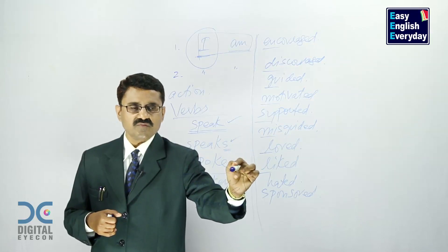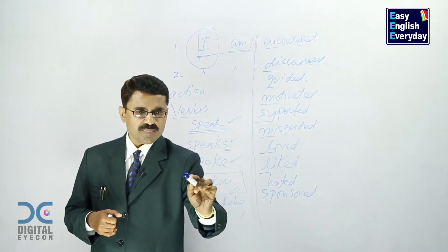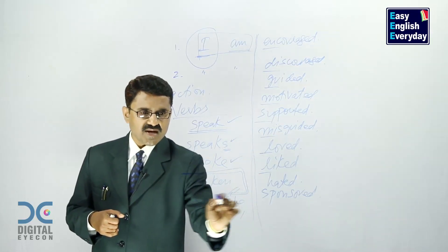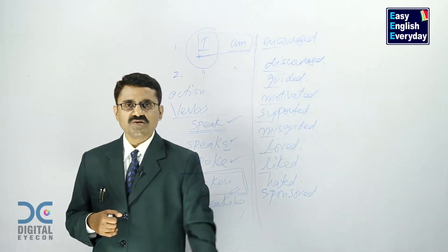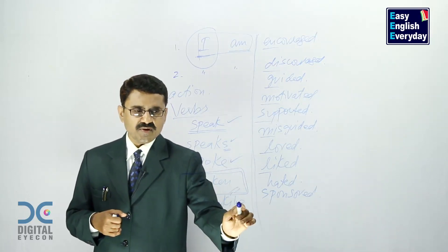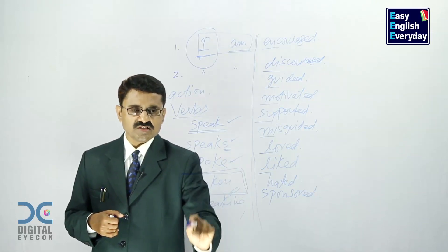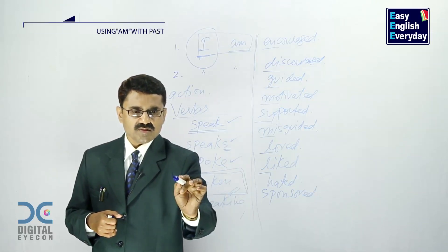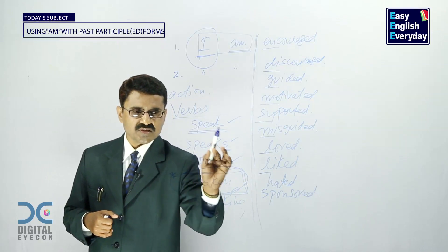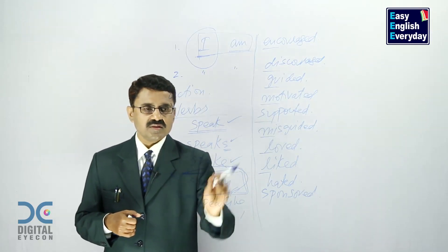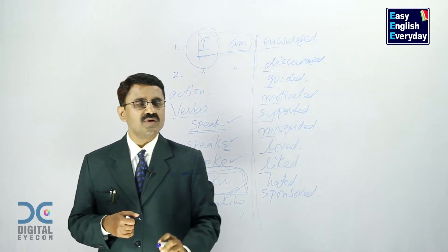All these are past participle forms of the verb. Then we have the last one called the ing form: 'speaking.' So 'speak' is the base form, 'speaks' is the s form, 'spoke' is the past form, 'spoken' is the past participle form, and 'speaking' is the ing form. In this video I am not going to confuse you by talking about all these forms — we are bothered only about past participle. This is one of the five forms of an action verb.